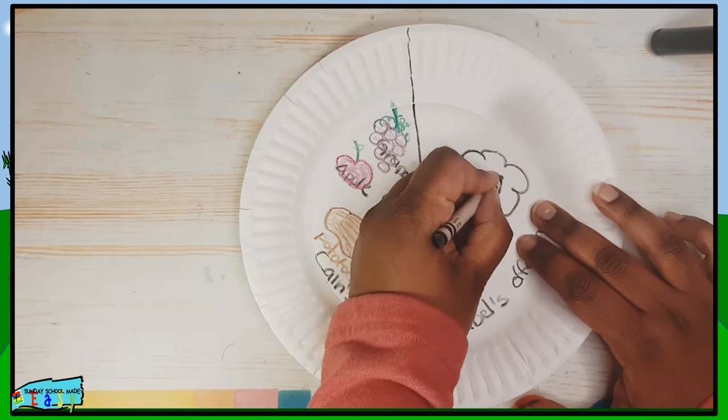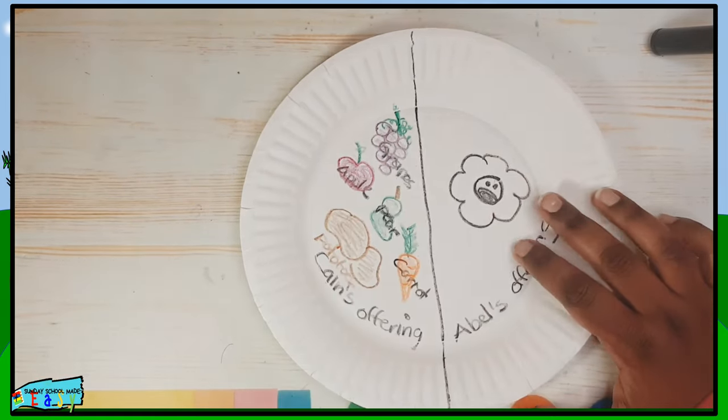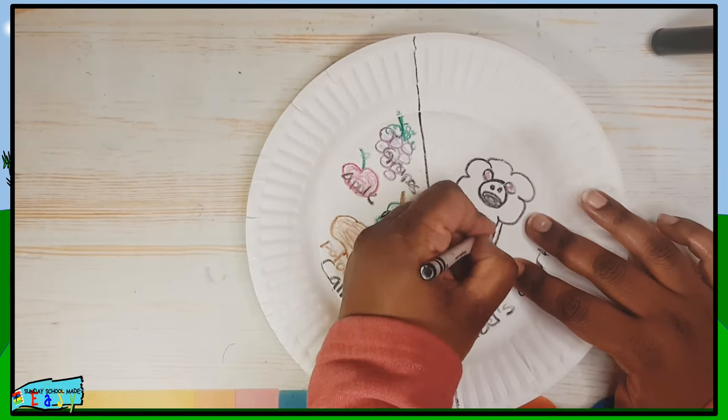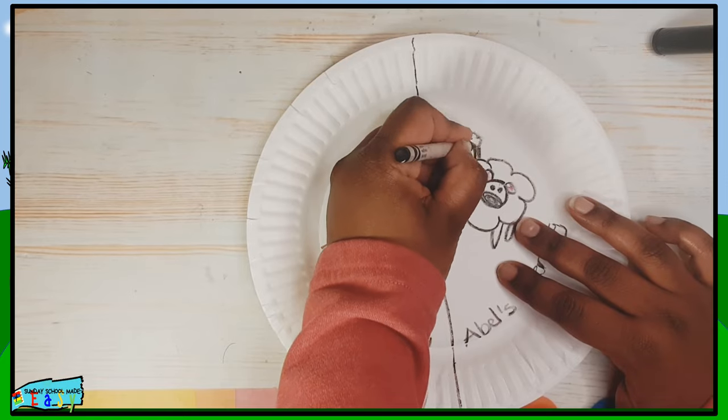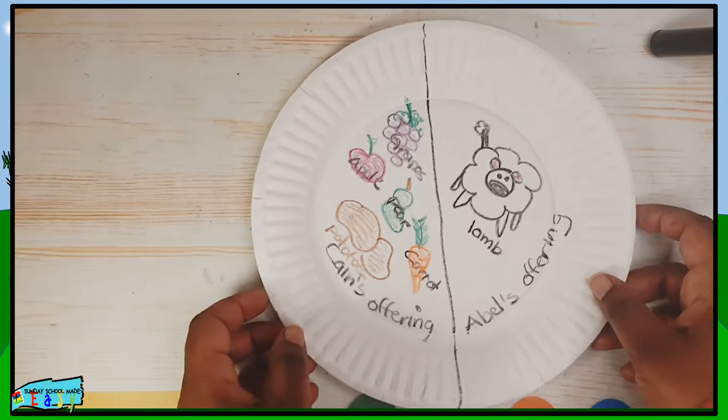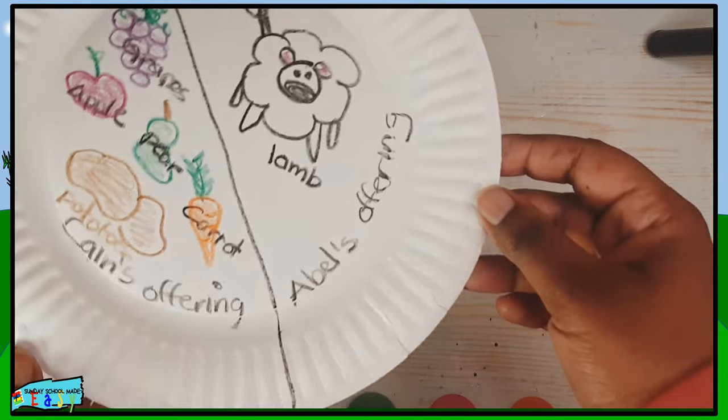Now on Abel's side he worked with the livestock so we're just going to make a simple sheep and put that as Abel's offering. So this is what you should have so far.